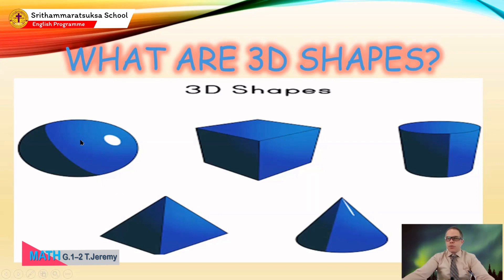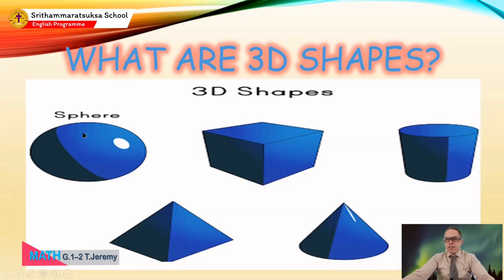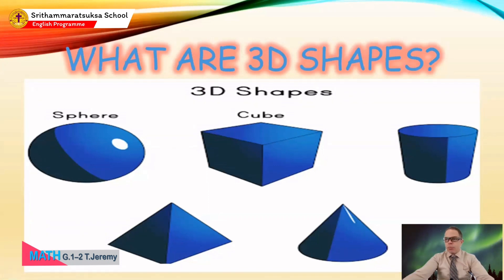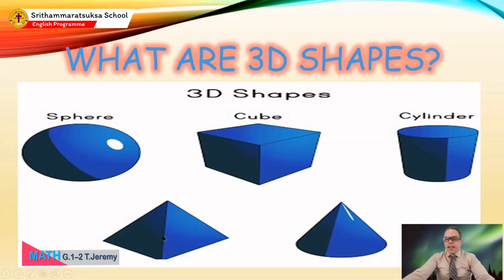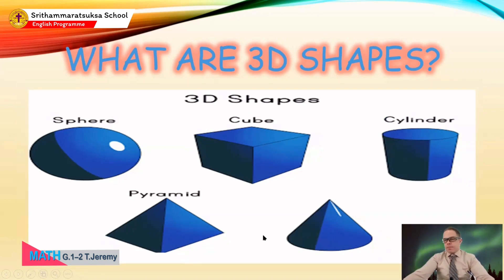The first one — it's not a circle, it is a sphere. That's right! And the second one, do you know what it's called? It is a cube. What about the third one? Do you know what that is called? A cylinder — can you say 'cylinder'? This one down here on the left, do you know what it's called? It is a pyramid. And the last one, it starts with a C — it is a cone.